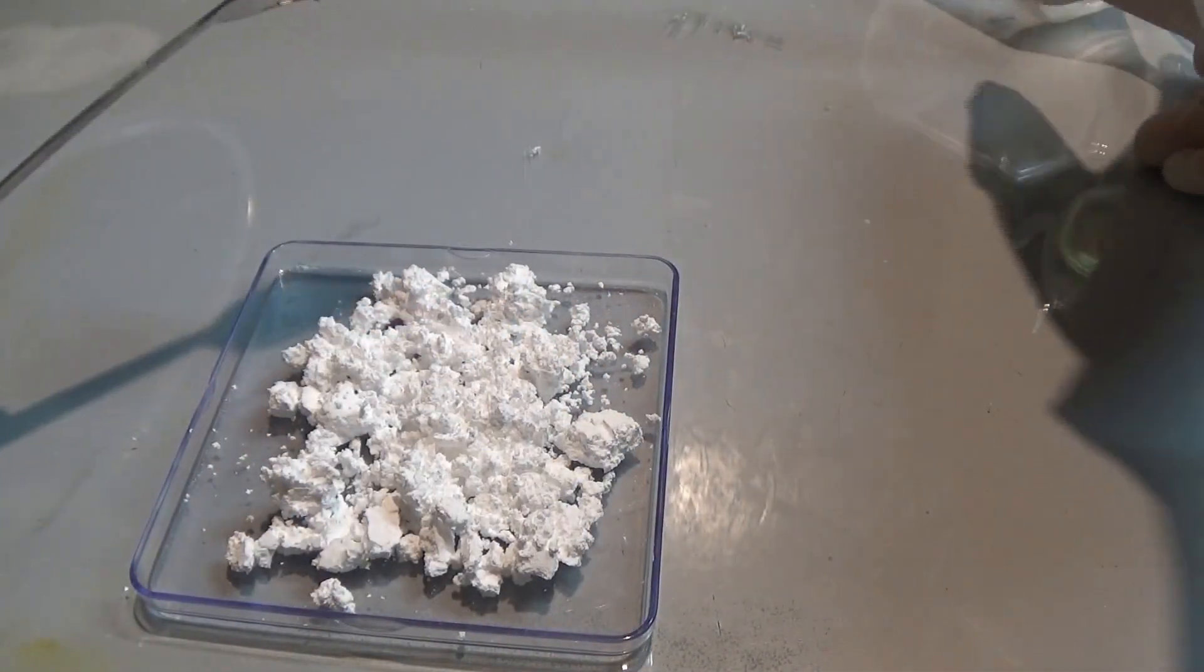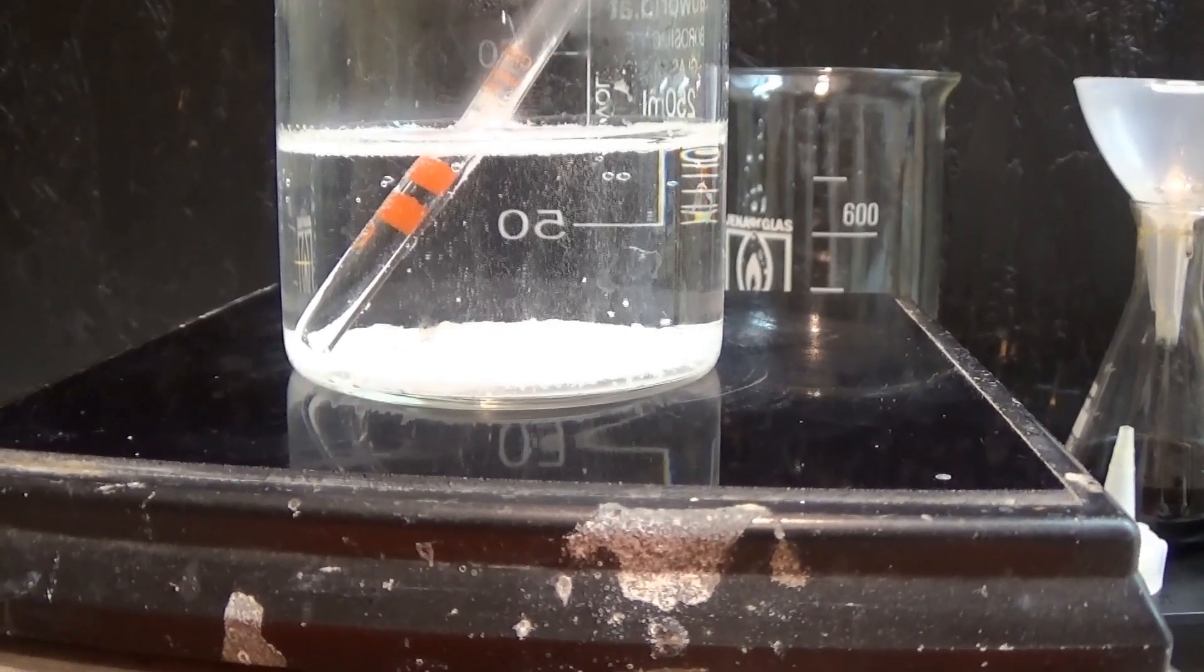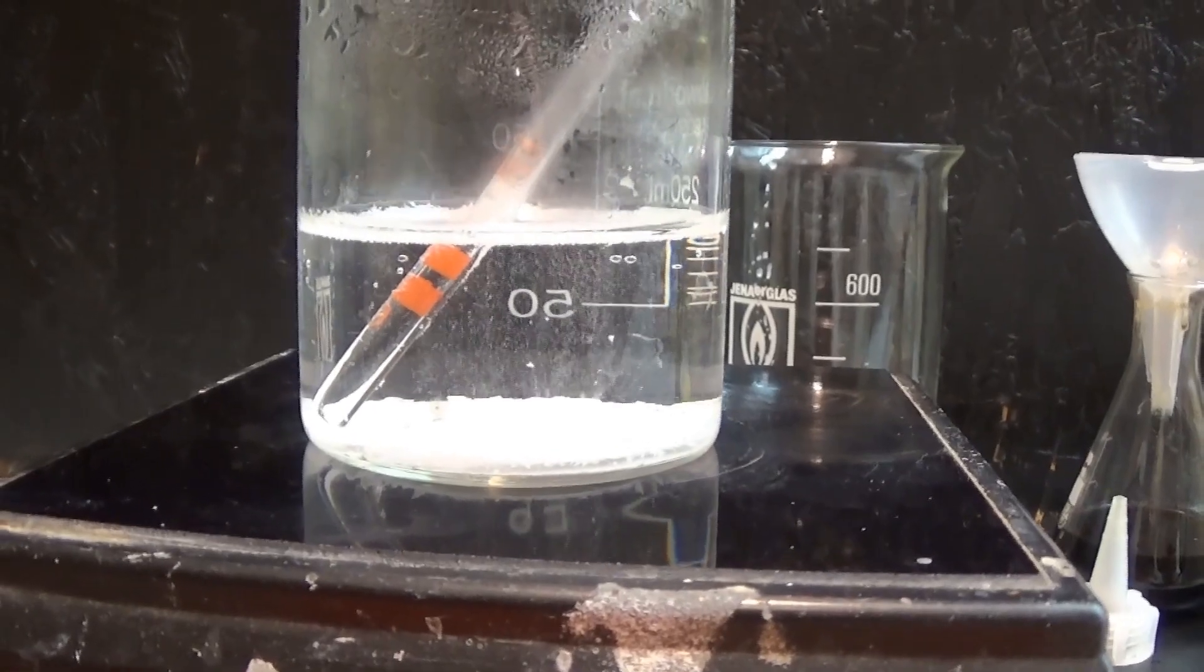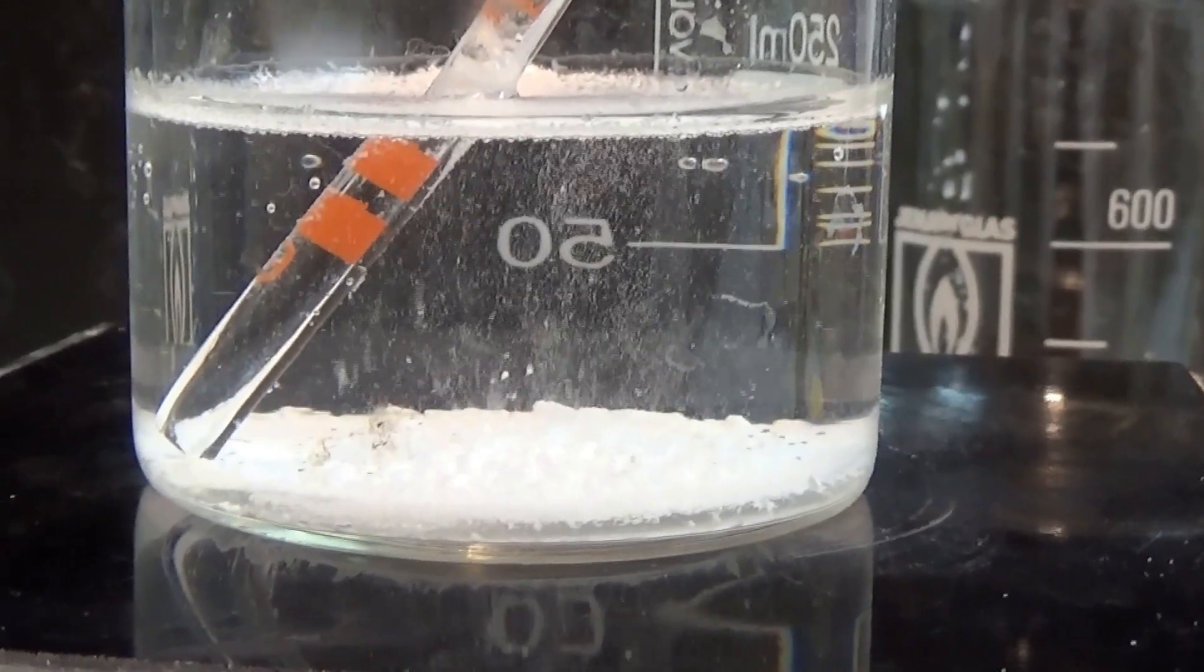So I recrystallized some of the lead chloride so that I could show you the nice crystals it forms when recrystallized from water. Therefore I just threw a bunch of the PbCl2 in water, boiled it, and let it cool in the fridge.